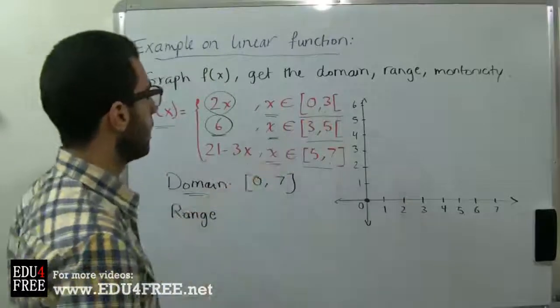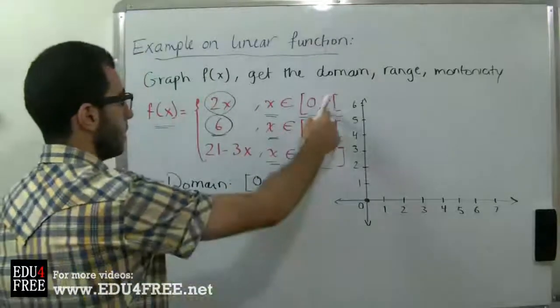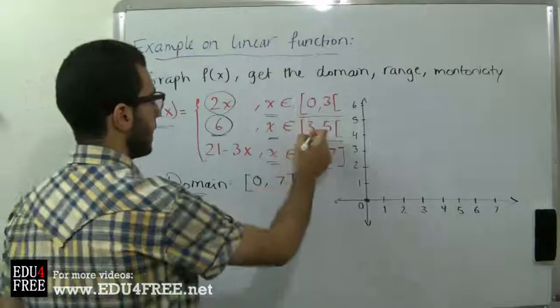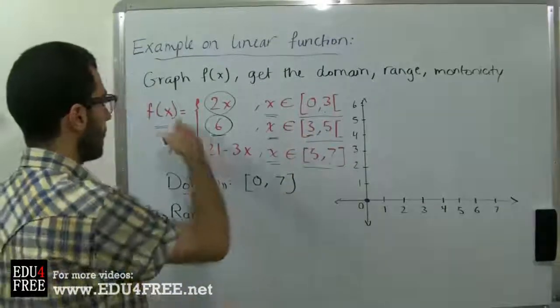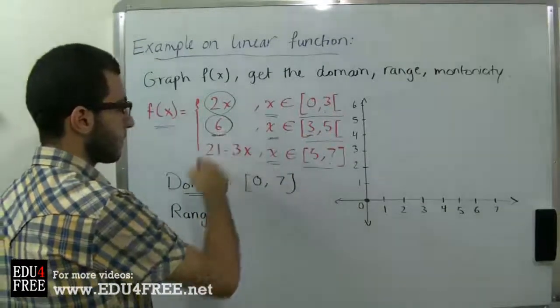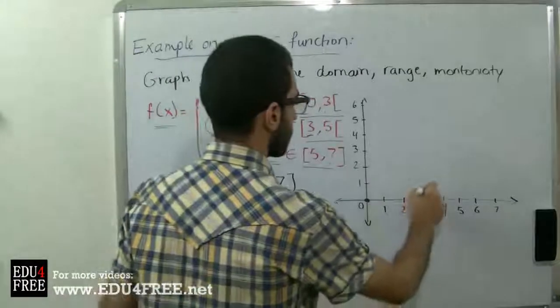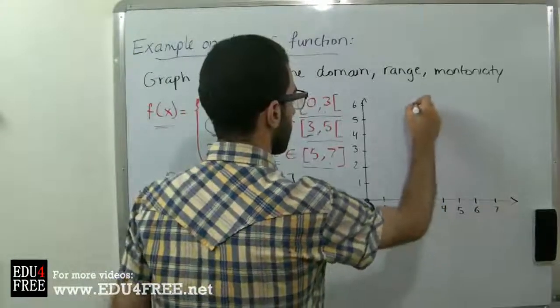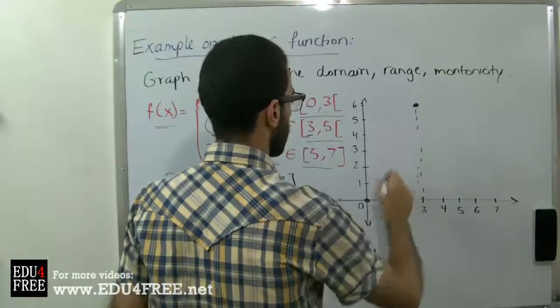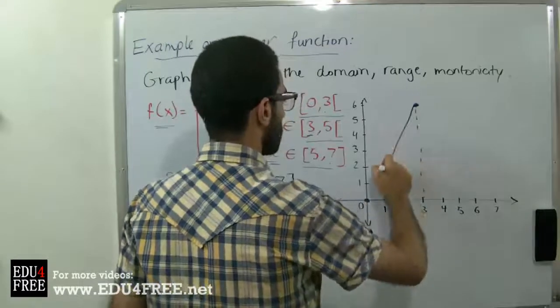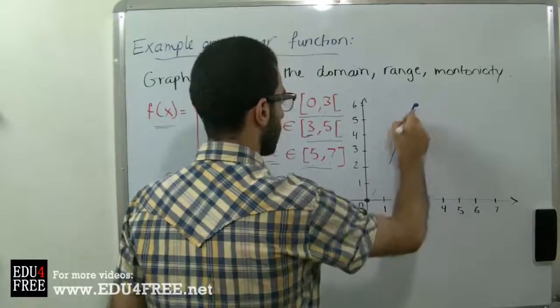And then at 3, at that point f(x) equals 6. So this is the second point and this is the first part of the function, which goes linear. So this is the first part.